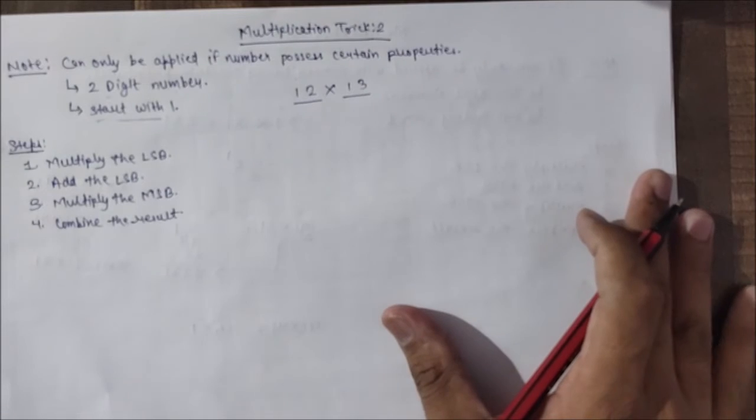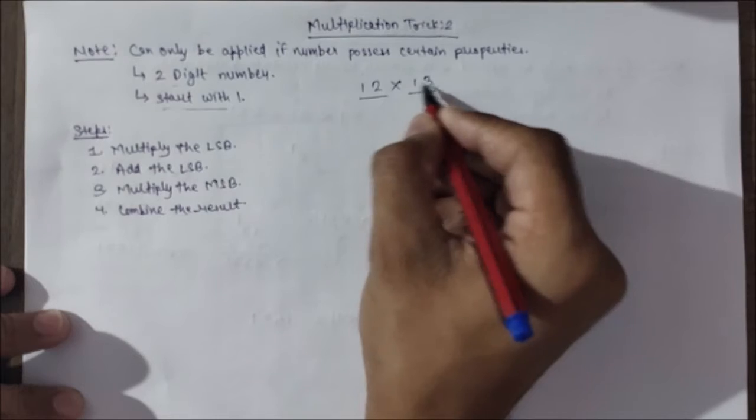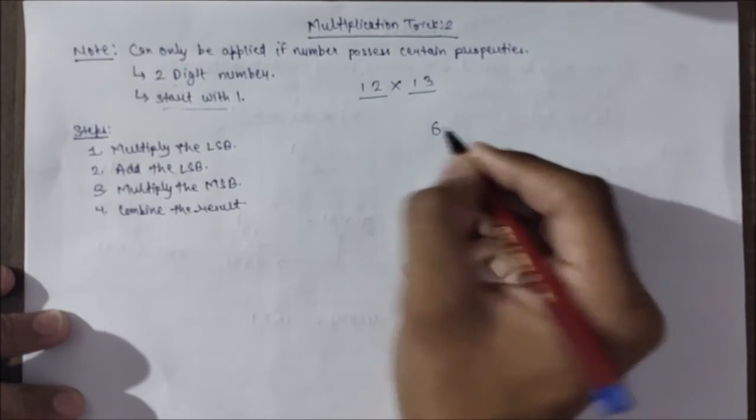Steps involved are as follows: Multiply the LSB. 2 multiplied by 3 is 6.